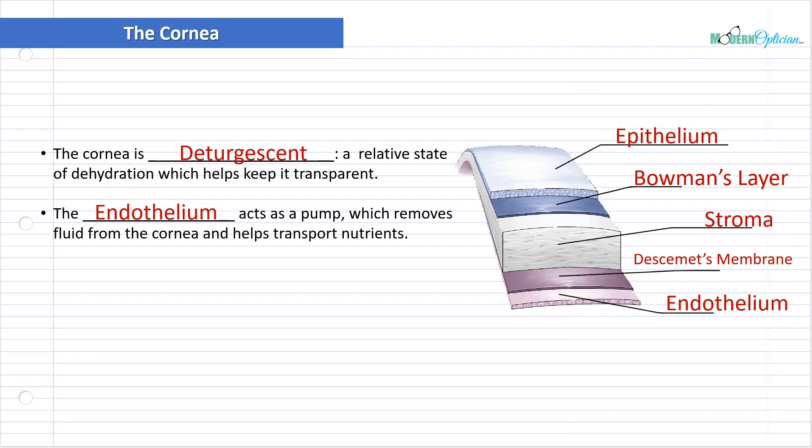There are some diseases of the eye, one particular one called Fuchs dystrophy, where the endothelium starts to be defective, and it doesn't allow this to happen, and the cornea swells. We know that a good functioning endothelium is extremely important to vision so that it can maintain that detergescent state and remain transparent.